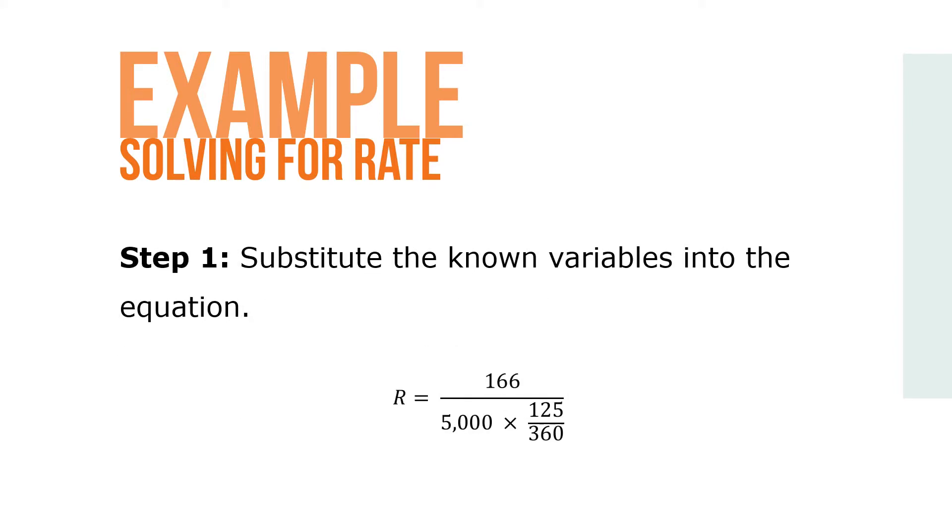Step 1: Substitute the known variables into the equation. r equals 166 over 5000 times 125 over 360.